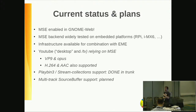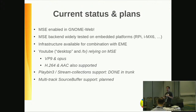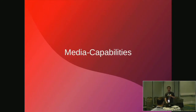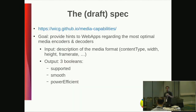Another thing we plan to work on is a multi-track source buffer. It's not really widespread on the web, but it's nice to have for test coverage. In that case, the web application can provide multiple tracks at the same time, and WebKit can just select the ones it wants. Another spec we've been working on — still a draft — is about letting the web application probe for the capabilities of the browser, both on the encoding and decoding level, so that the application can feed the right content to the browser and we are sure it will work.